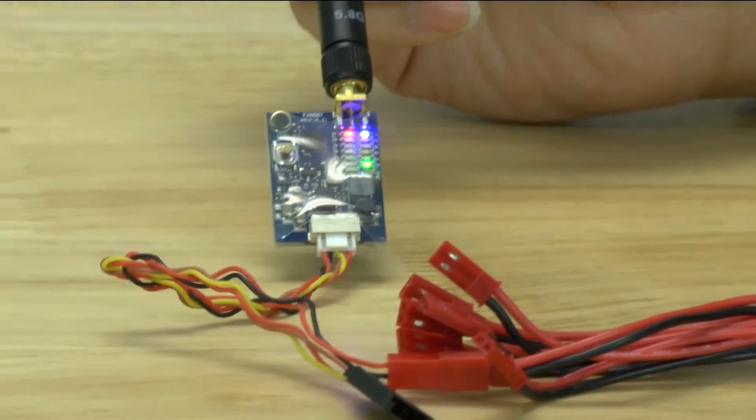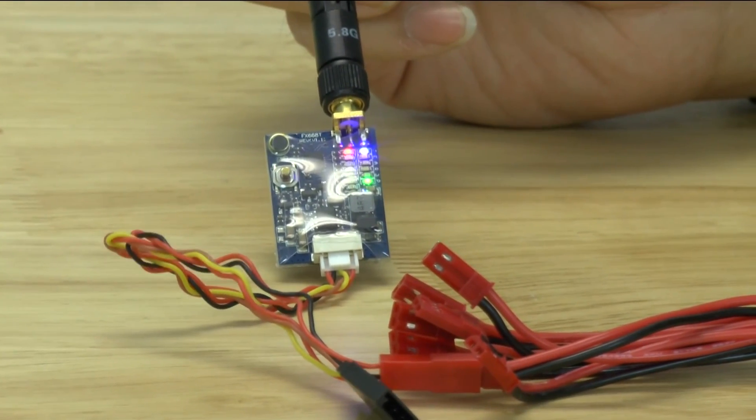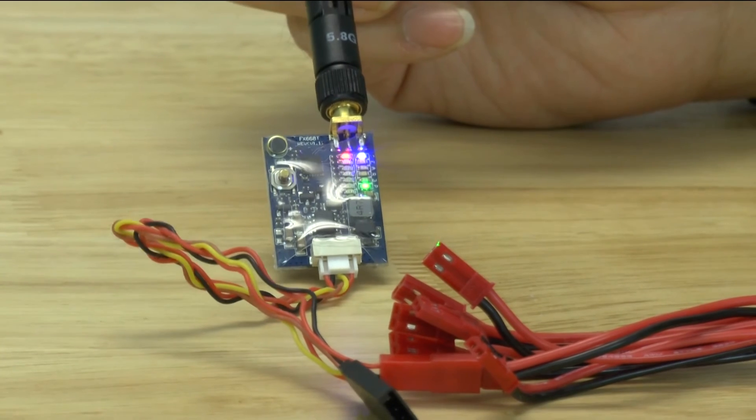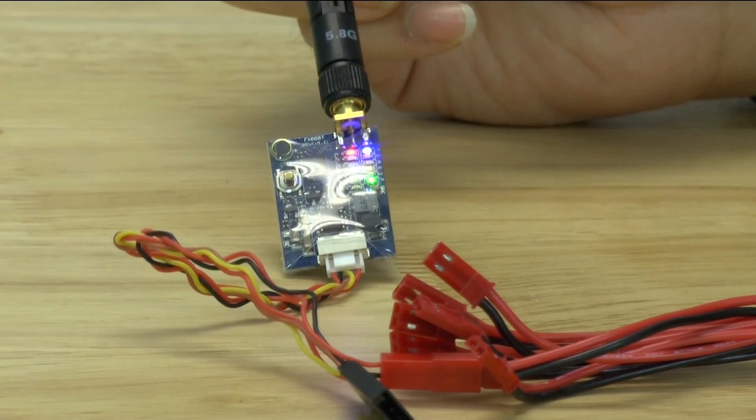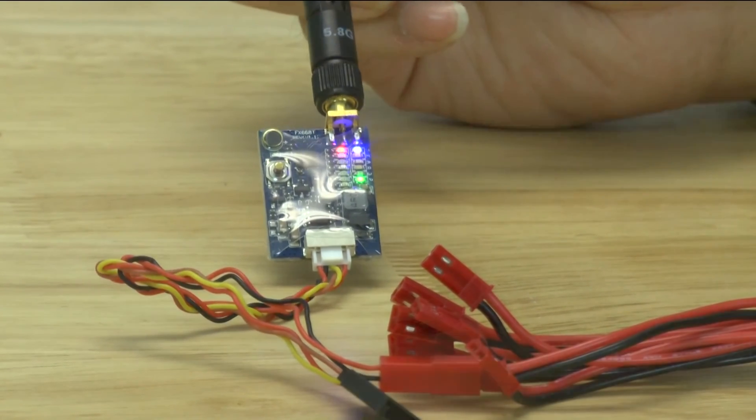So just like the other one once you plug it in, once it starts broadcasting video it is going to start getting warm on you but it's really nice to be able to turn the RF off and then save yourself on some heat.